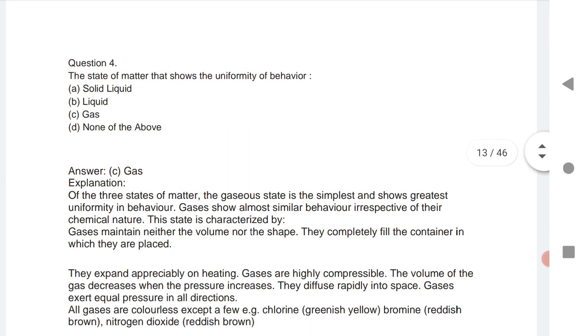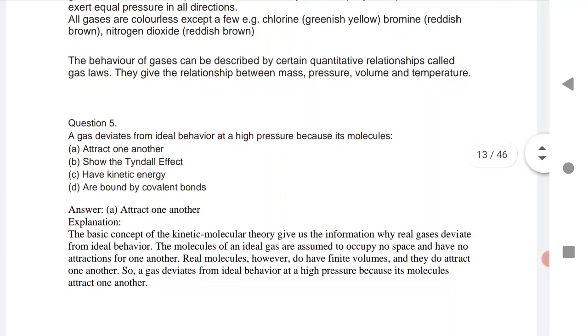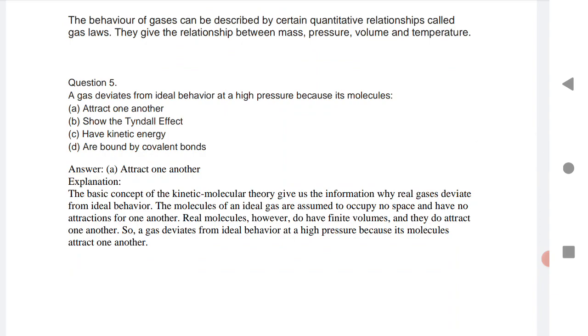This is very simple. The state of matter that shows uniformity of behavior - that is gas. You know that there are three states of matter: solid, liquid, and gas. States of matter that show uniformity of behavior - that is only gas. Next is Question 5: A gas deviates from ideal behavior at high temperature because its molecules attract one another. Very important MCQ.